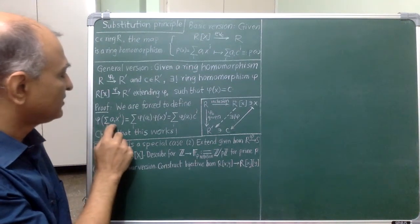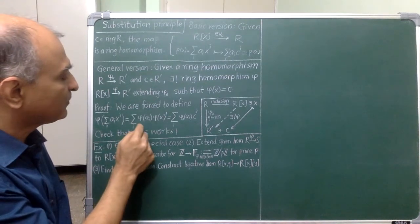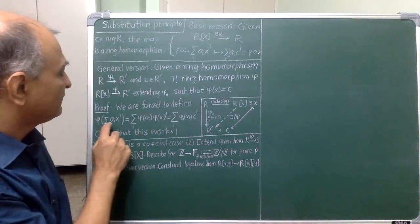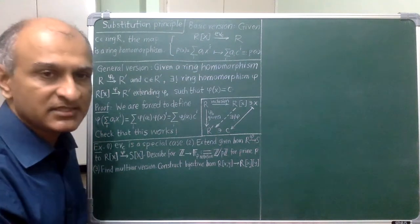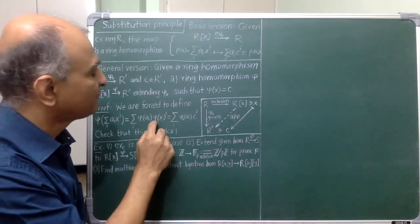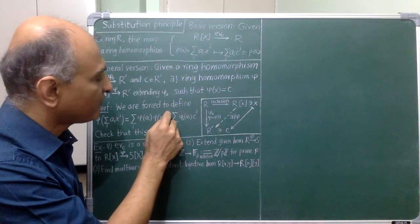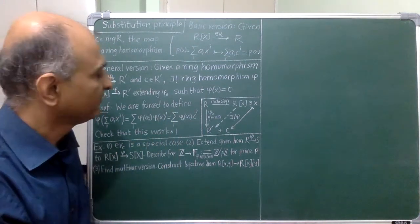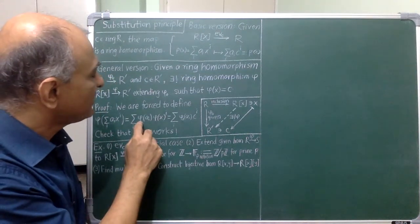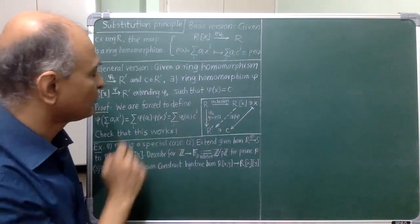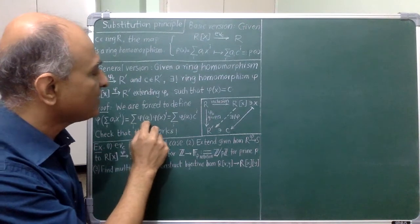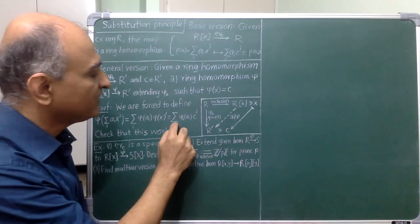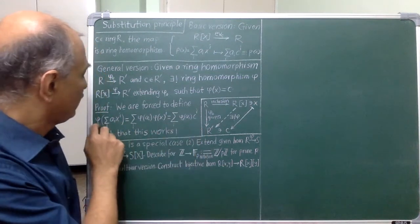To define phi of a general polynomial, I first pull out the summation because phi must preserve addition. Then phi of the monomial must equal phi of a_i times phi of x to the power of i because phi must also preserve multiplication. And now, since phi is supposed to match phi_0 on constants, phi of a_i must be phi_0 of a_i and phi of x is required to be C, giving me this formula for phi.